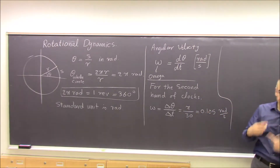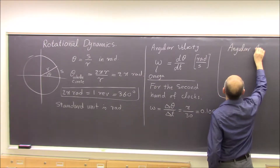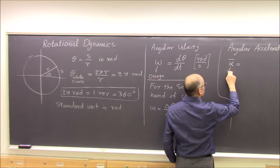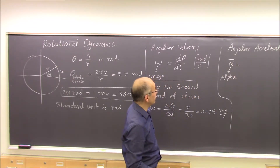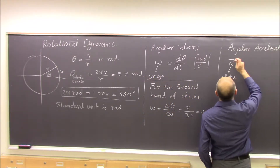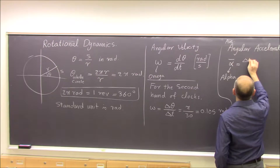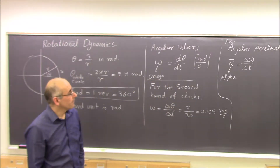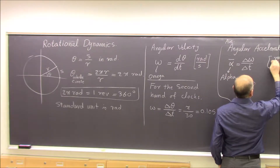Omega is how fast something is rotating around an axis. Then we talk about angular acceleration. Average angular acceleration is denoted by alpha-bar. Average angular acceleration is Δω/Δt — how much omega changes over time. Its unit is radians per second squared.